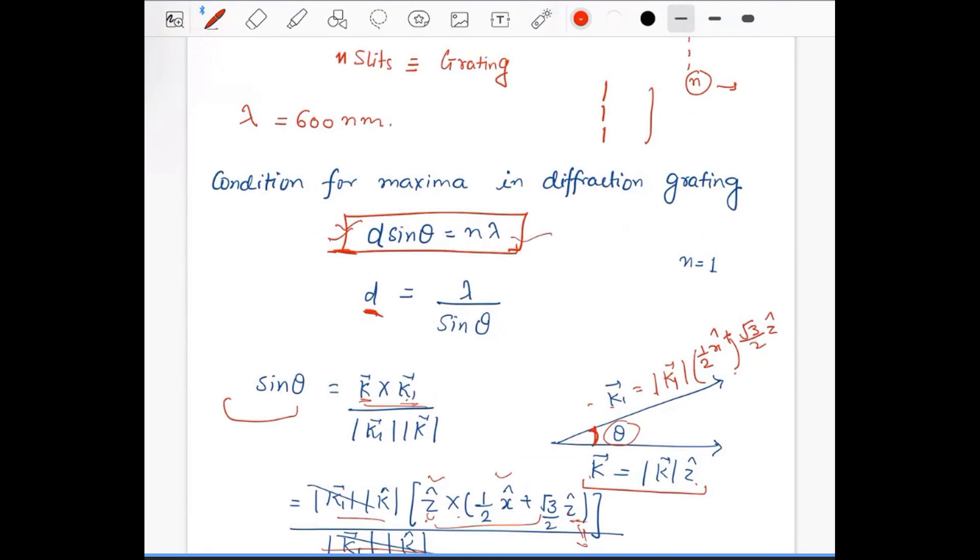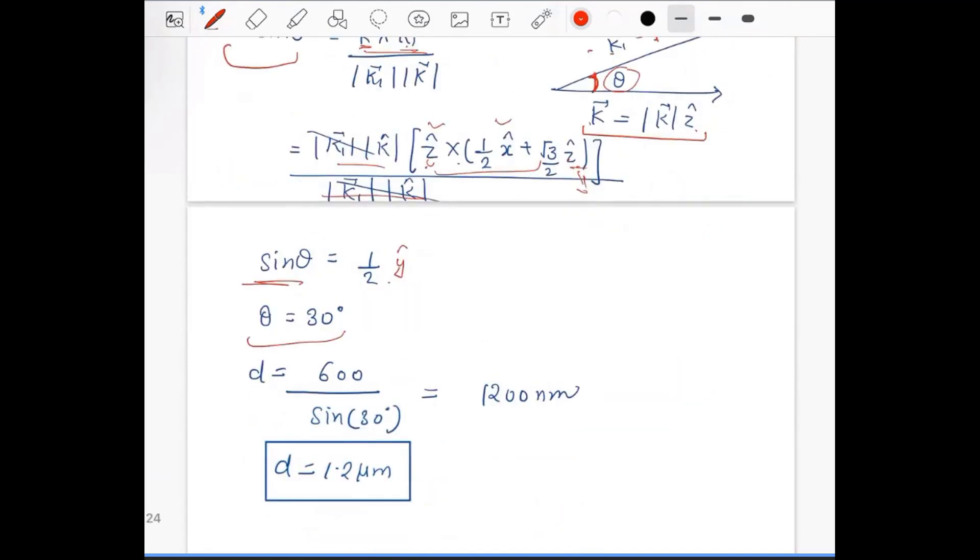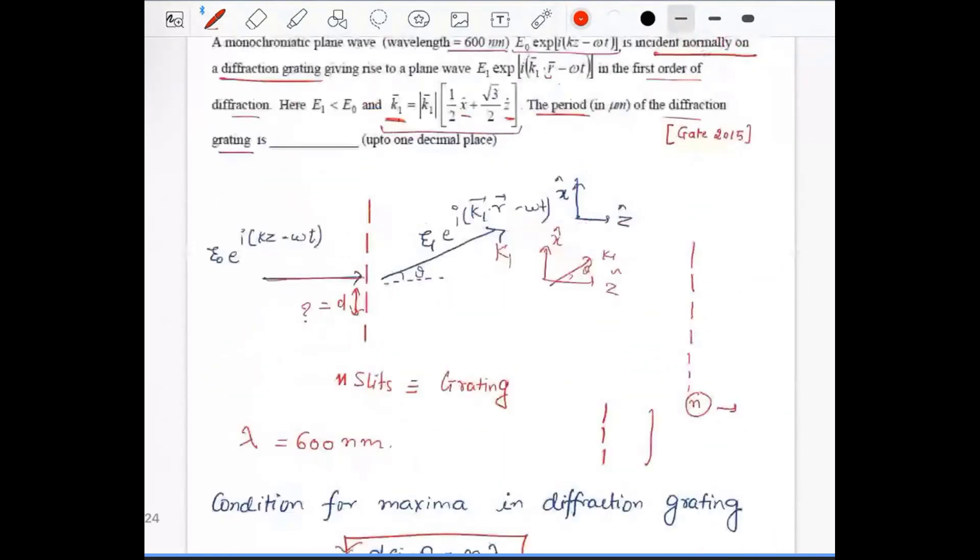It becomes 600 nm divided by sin 30°, which equals 1200 nanometers. So the grating period is 1.2 micrometers.